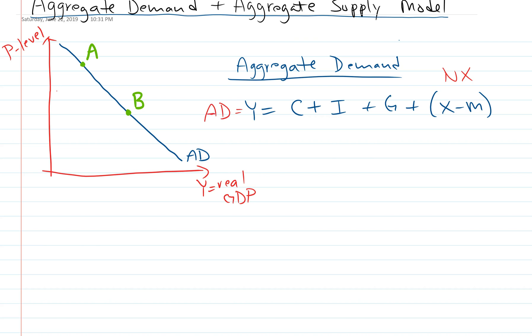This is how much stuff they want to buy at each price level. This curve is showing the relationship between the price level and the amount of stuff they want to buy. Now in the long run we wouldn't expect the price level to have an effect but we will in the short run.